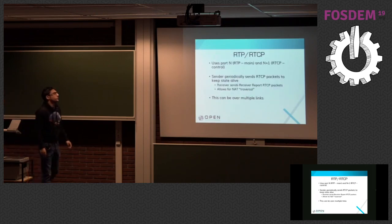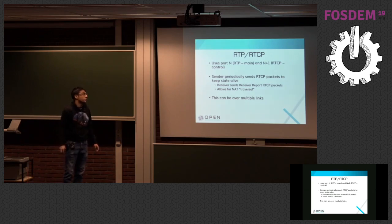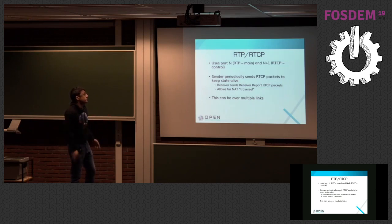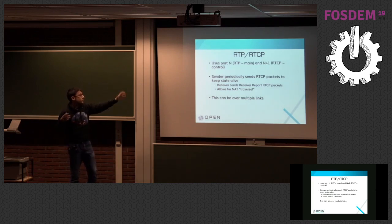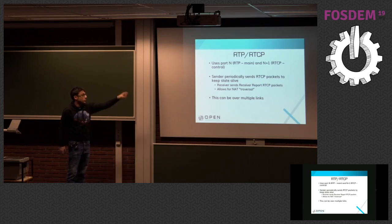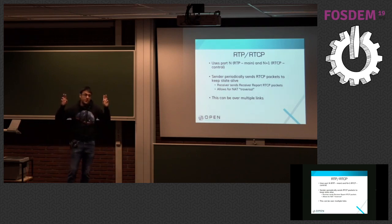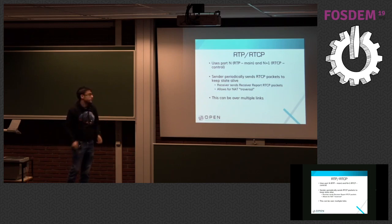A quick primer on RTP — Real-time Transport Protocol — and RTCP — Real-time Control Protocol. These are the main protocols used for UDP-based live video; WebRTC is another example that uses RTP. Usually the main traffic is sent on port N, and N plus 1 is for control and feedback data. The sender periodically sends RTCP packets on port N plus 1 to keep state, and the receiver responds using receiver report RTCP packets. RTP and RTCP can operate over multiple links.